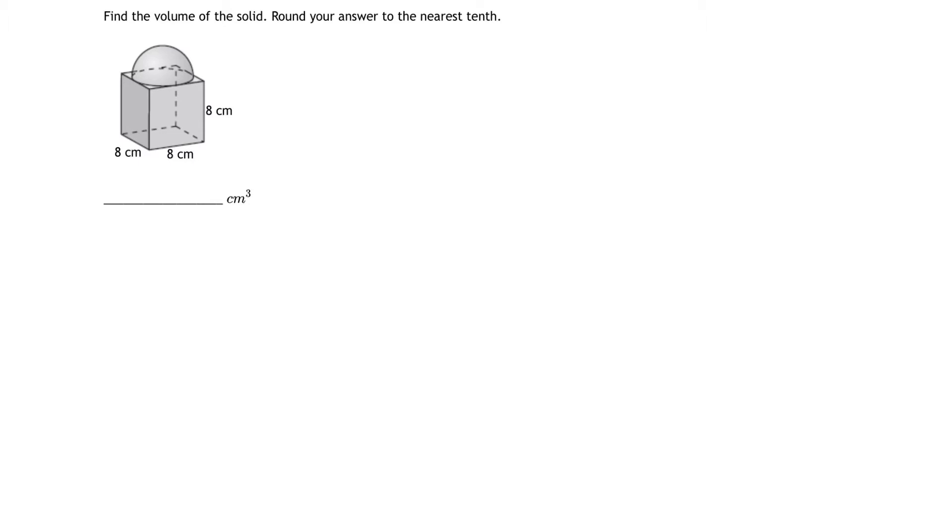What makes this problem difficult is that our solid is an irregular one. It's actually composed of two parts, or two distinct shapes. The first one is the bottom one, and that's a cube. And the second one, on top, is half a sphere. Or in other words, we call it a hemisphere.